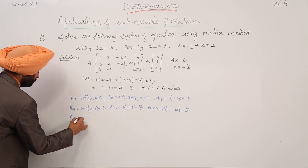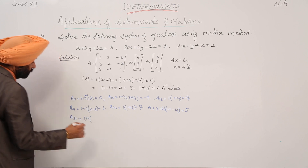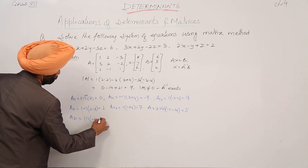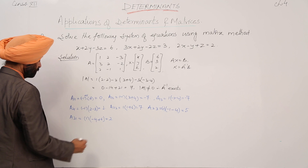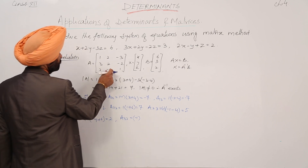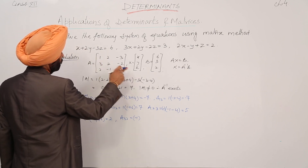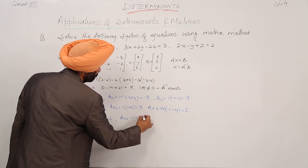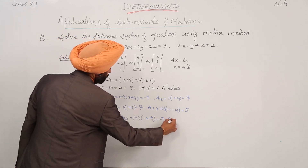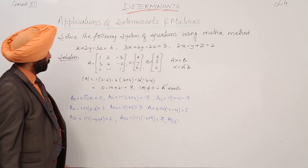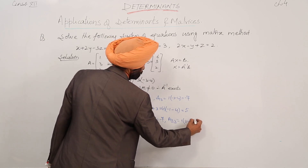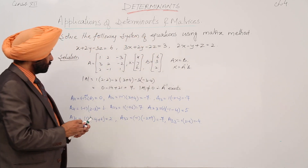Now A31 is equal to positive 1 with (minus 4 plus 6), this is equal to 2. A32 is equal to minus 1 with (minus 2 plus 9), this is equal to minus 7. And A33 is equal to positive 1 with (2 minus 6), this is equal to minus 4. So here are all the cofactors.